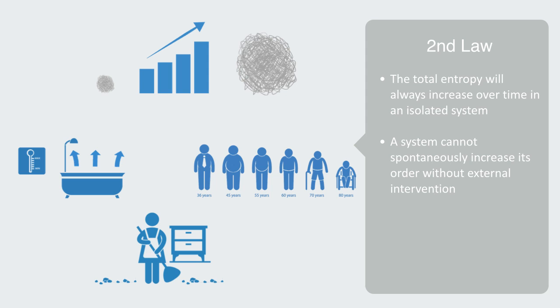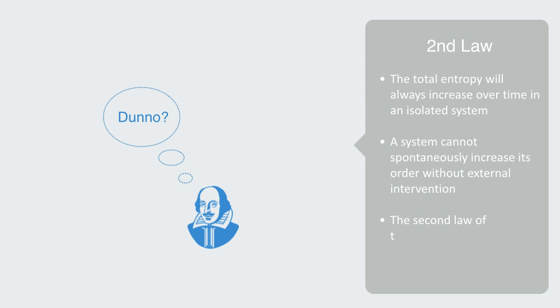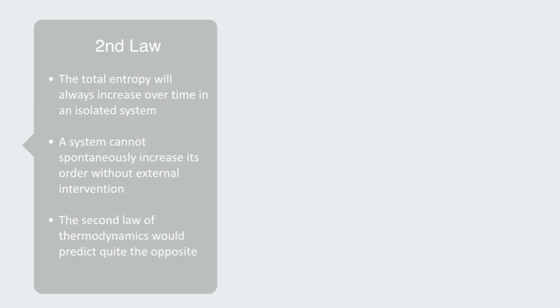For many years, the second law of thermodynamics, that systems tend toward disorder, has generally been accepted. Unfortunately, none of this helps us in answering Shakespeare's question as to why our universe has, in fact, developed to produce at least some systems with extraordinarily high levels of organization. In fact, the second law of thermodynamics would predict quite the opposite.